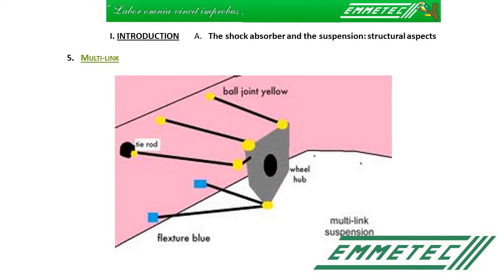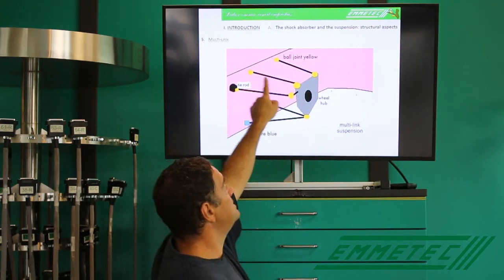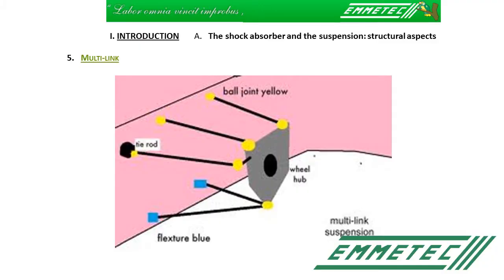A different solution could be the multilink. Multilink is very similar to wishbone: you have a triangle at the lower level and something similar at the upper level. The difference is that you change the connection points in order to adapt the suspension to other components of the car, like the frame, the fuel tank, the seats of the passengers — components that are a priority compared to the suspension. This solution appeared more or less in the 1980s, especially on Japanese cars and then also in German and other kinds of cars.